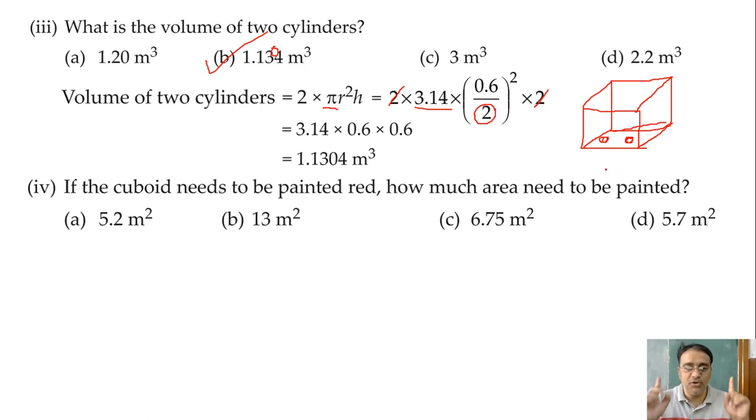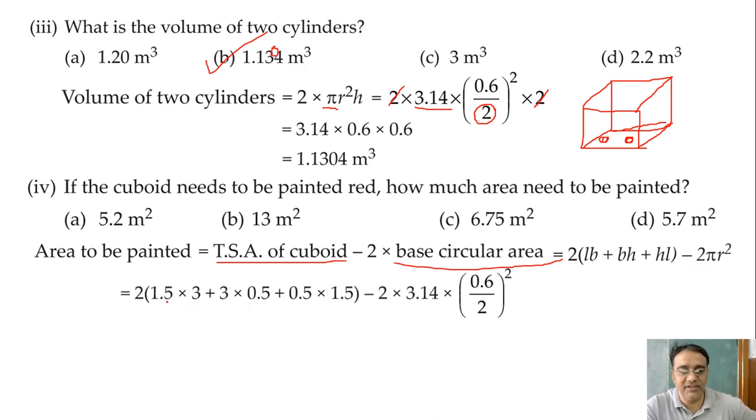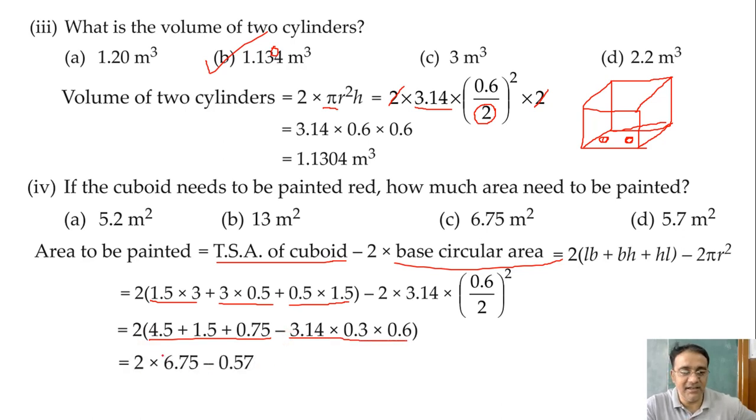Yes sir. So total surface area of cuboid minus 2 into base circular area of cylinder. So that is base circular area is πr² and what is the total surface area of cuboid? 2 into LB plus BH plus HL. Very good. So now we will substitute all the values. So 2 into (1.5 into 3 plus 3 into 0.5), this becomes 4.5, 1.5, and this will become 0.75. 2 into 3.14 into 0.6 by 2, the 2 cancels, so we can write 3.14 into 0.6 into 0.3.